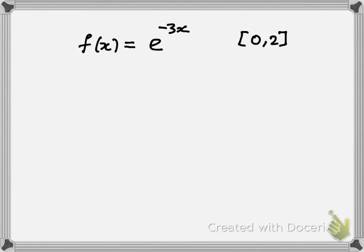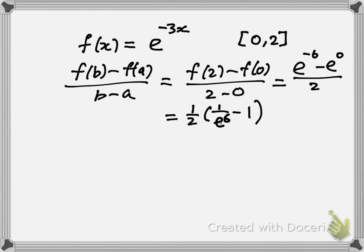Now let's see what is f(2) minus f(0) over 2 minus 0. This is what I get after simplifying: half of 1 over e to the 6 minus 1, which is probably a negative number.